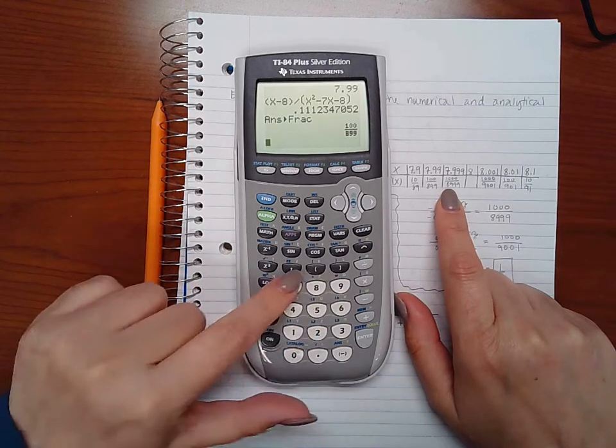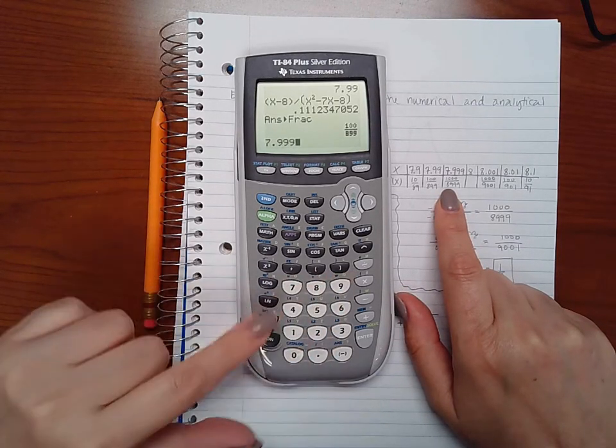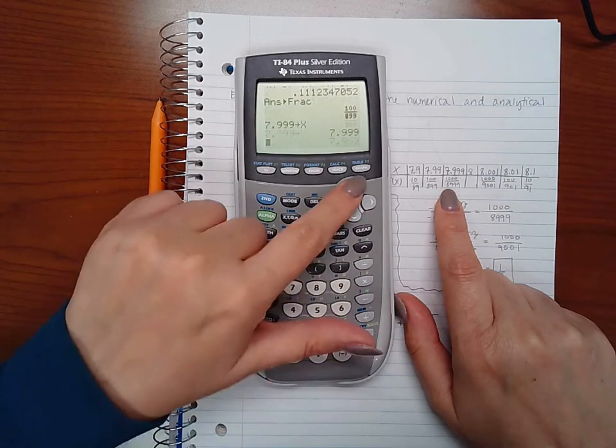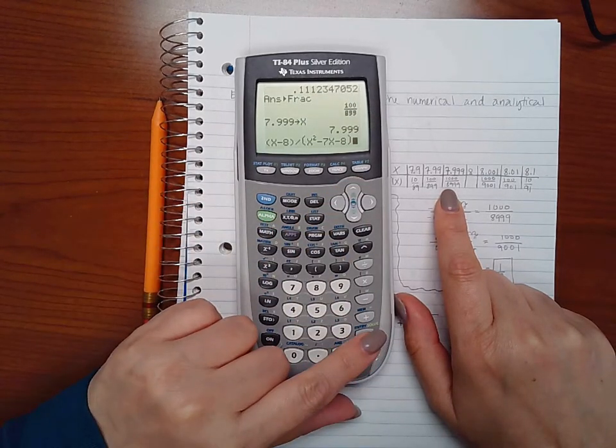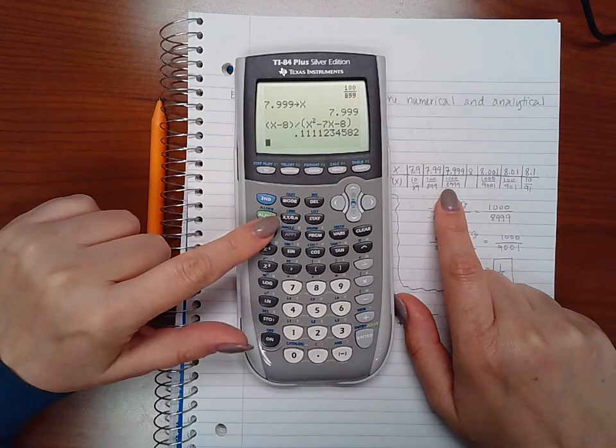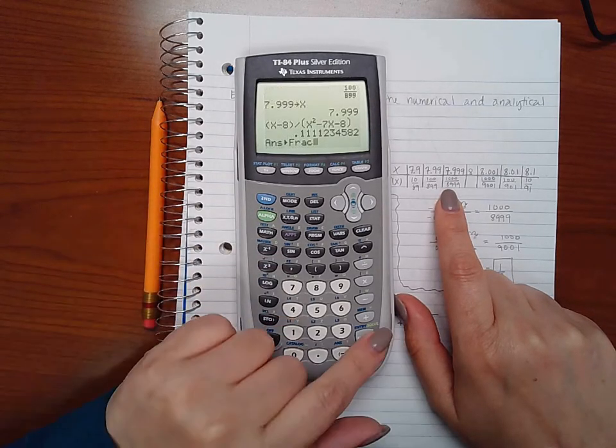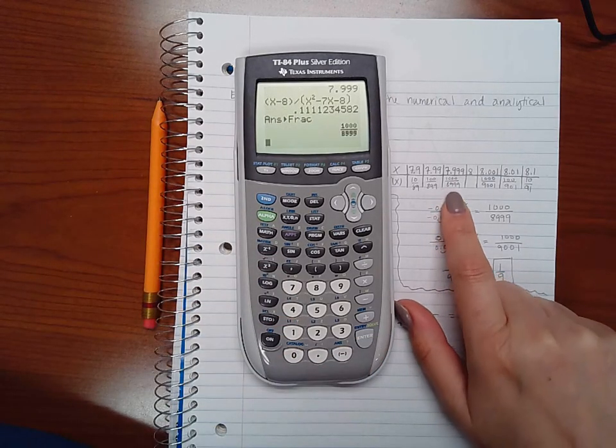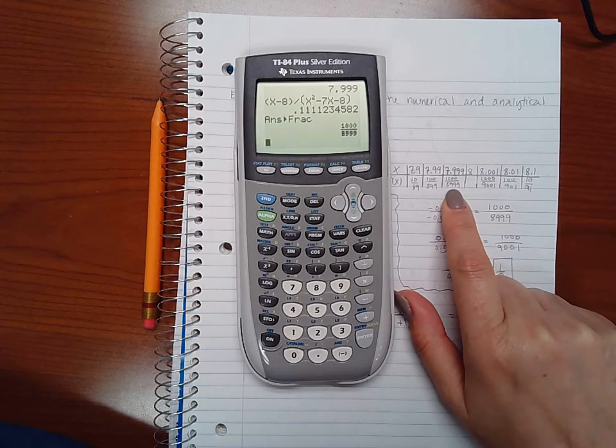Now I'm going to do 7.999, store as x, go copy my function, hit enter to plug it in, and then do math and fraction again and I get 1000 over 8999.